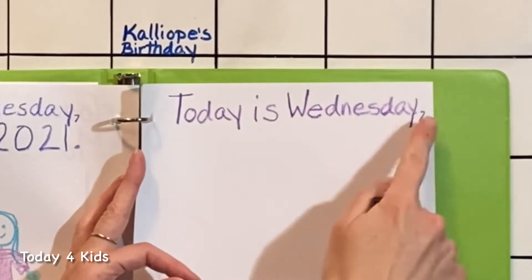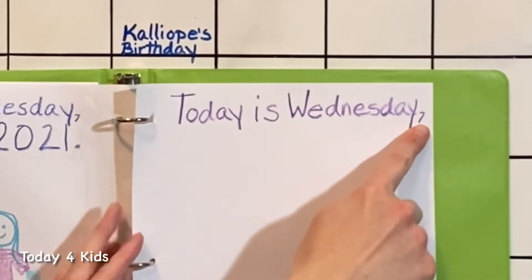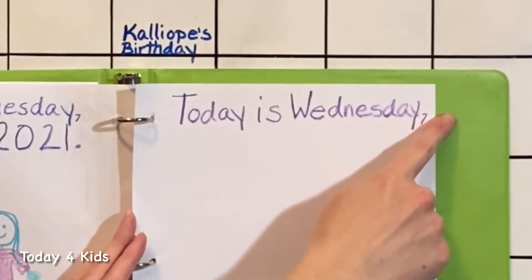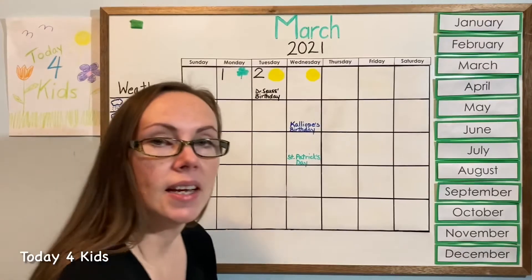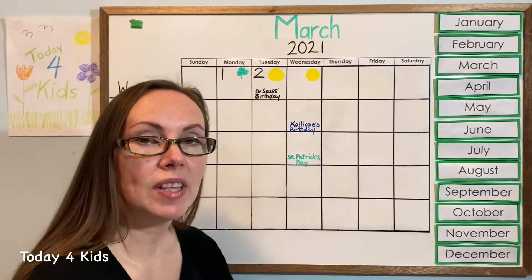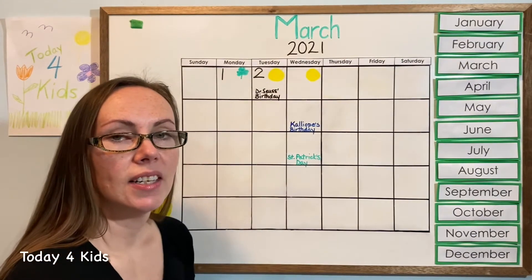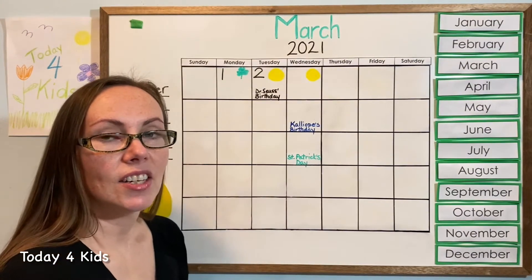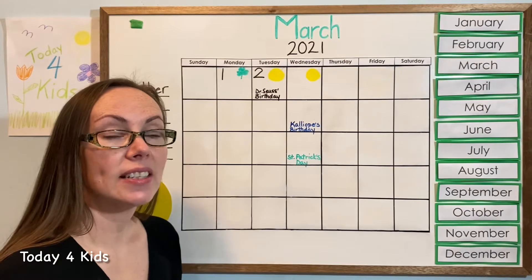And then a comma. The comma reminds us to pause before we say our next word. And our next word is going to be the month. Do you know which month we are in? Do you remember? Good guessing. Let's see if we're correct.